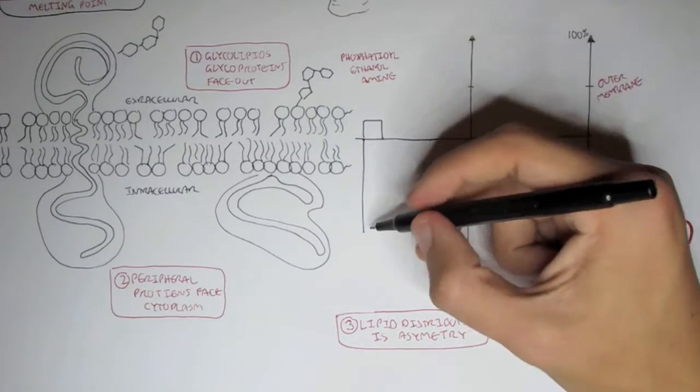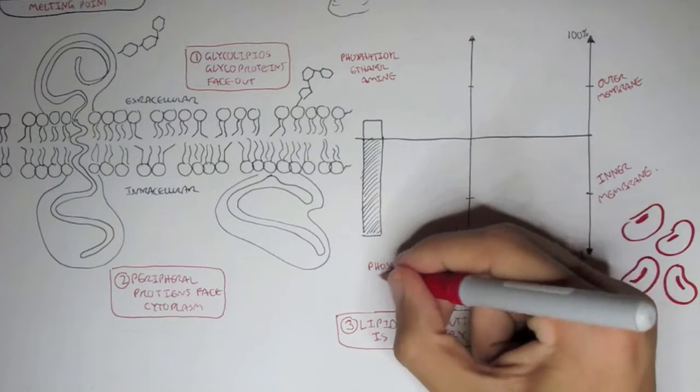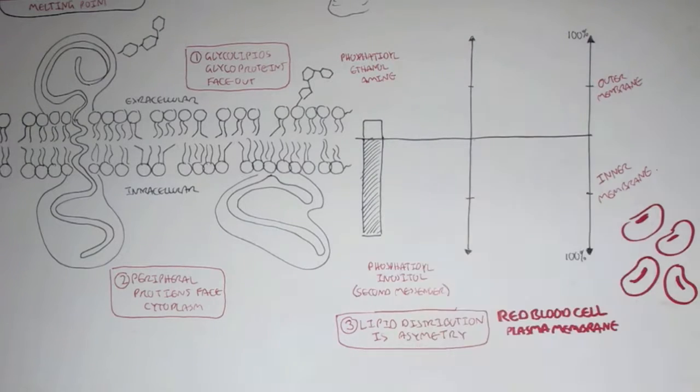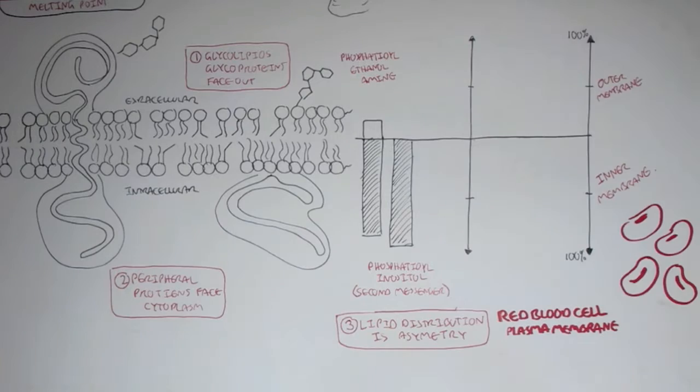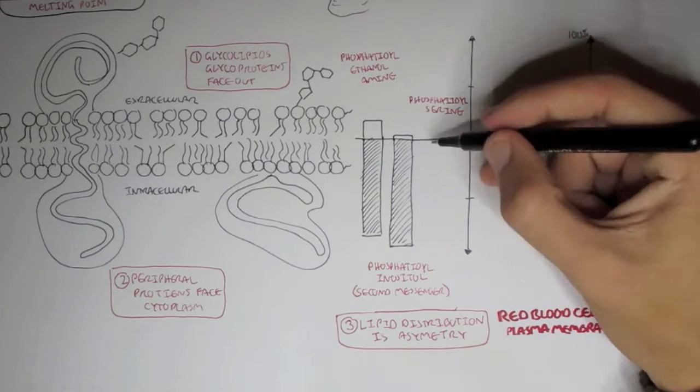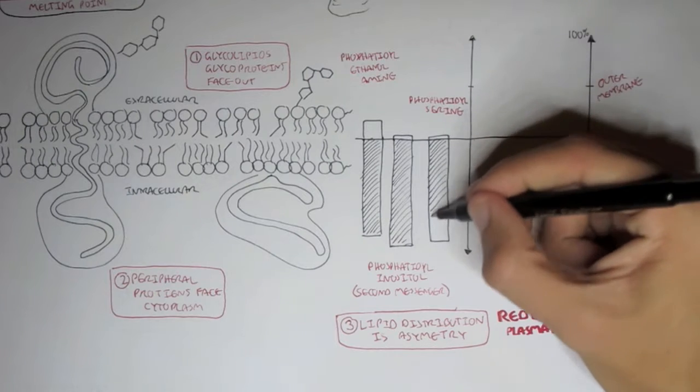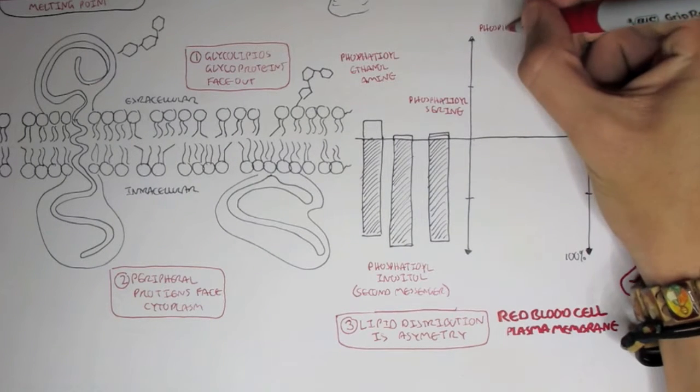For example, here we have phosphatidylethanolamine, and as you can see, there's higher concentrations of phosphatidylethanolamine in the inner membrane. Phosphatidylinositol, which is a second messenger, has also higher concentrations on the inner membrane. Phosphatidylserine, which is very similar to phosphatidylethanolamine, there's higher concentrations on the inner leaflet.